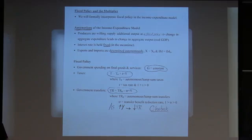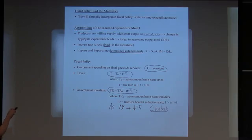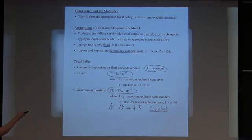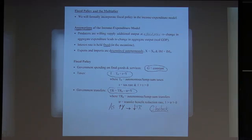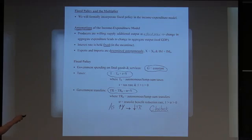Now we formally alter the model to incorporate fiscal policy more explicitly in the income-expenditure model. Our assumptions continue: producers supply additional output at a fixed price, any change in aggregate expenditure results in a change in real GDP, the interest rate is held frozen, and imports and exports are exogenous. Government spending G is still a constant determined by the government.